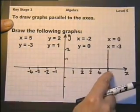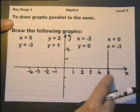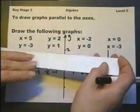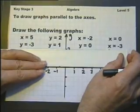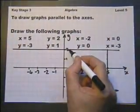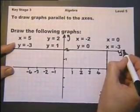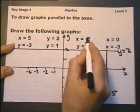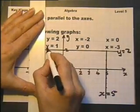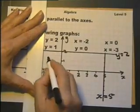So, if that passes through the x-axis at 5 and it's x equals 5, then y equals 2 must go through the y-axis like that at y equals 2. So, x equals minus 2 must pass through the x-axis at x equals minus 2.